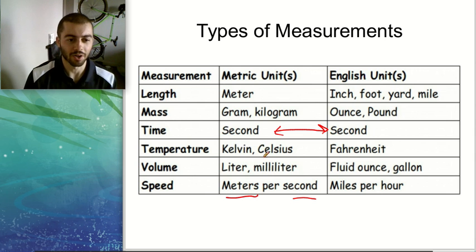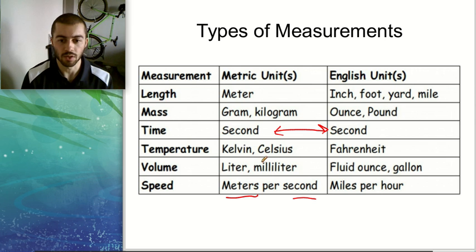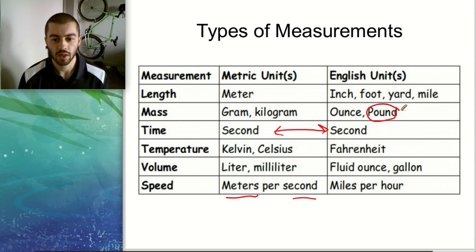We'll come back to that later on why those units end up the way they do. The English units, obviously, you've probably heard of a lot of these like pounds. That's what we generally measure our weight in. So when you go to the doctor and step on the scale and they tell you how many pounds you weigh, we measure things generally in inches, feet, yards, and miles, things like that.